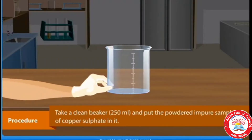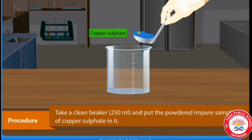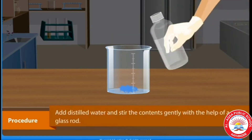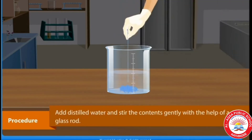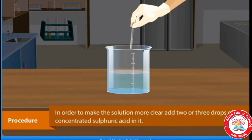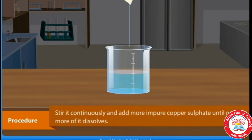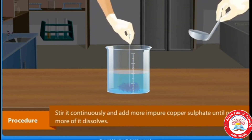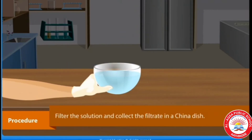Take a clean beaker and put the powdered impure sample of copper sulphate in it. Add distilled water and stir the contents gently with the help of a glass rod. In order to make the solution more clear, add two or three drops of concentrated sulphuric acid in it. Stir continuously and add more impure copper sulphate until no more of it dissolves.